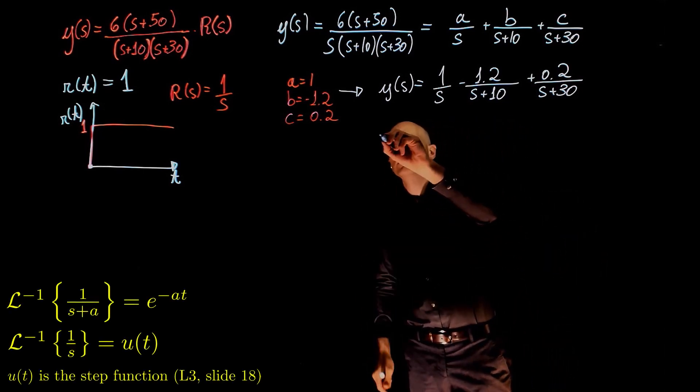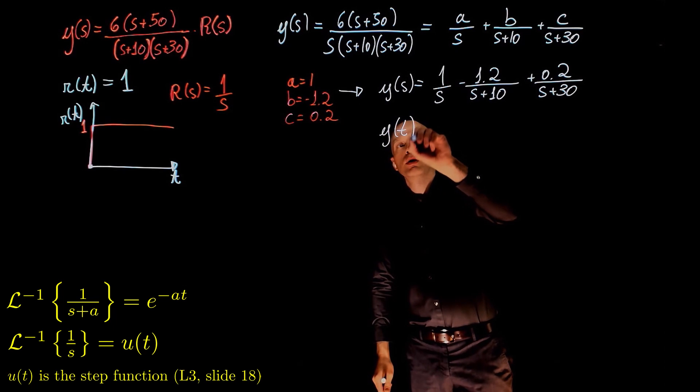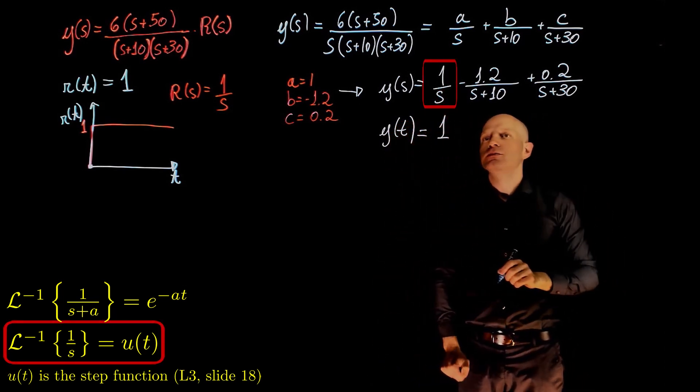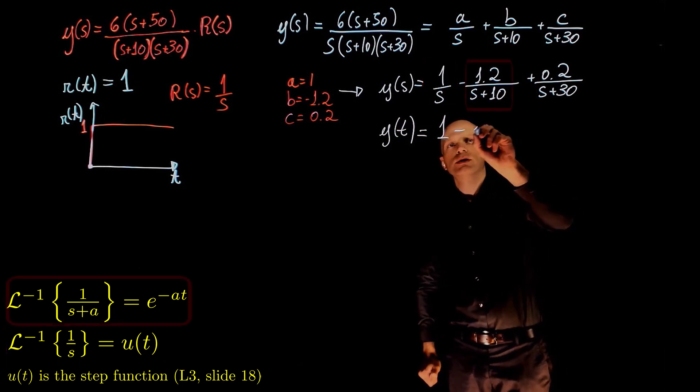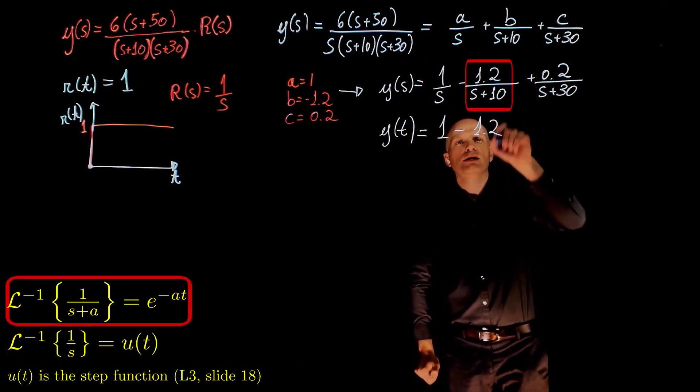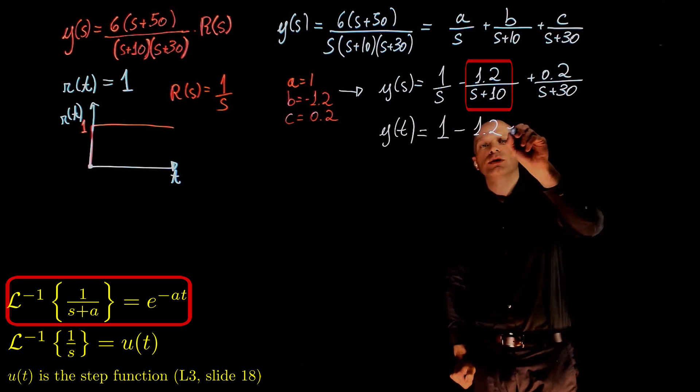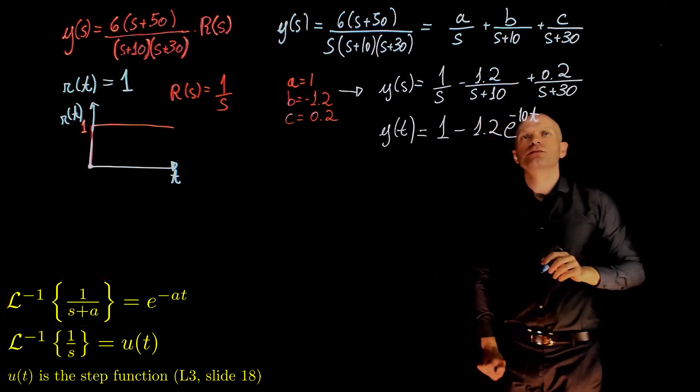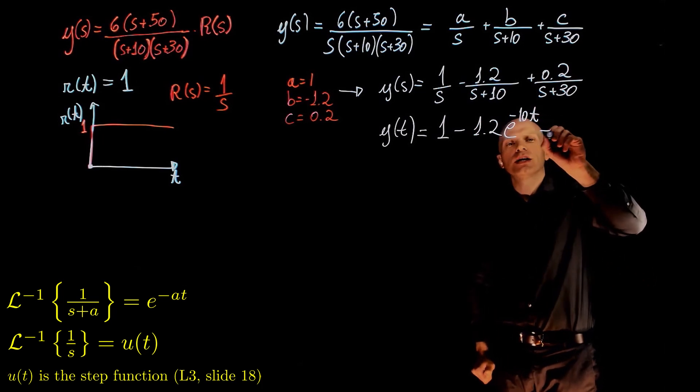y of t now is inverse of 1 over s is 1. 1 over s plus 10 is 1.2 times exponential of negative 10t. And for the last part,